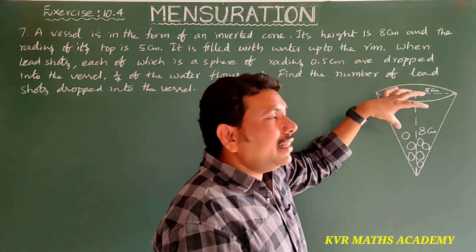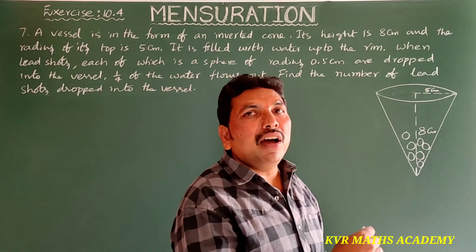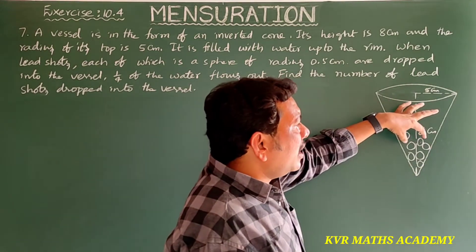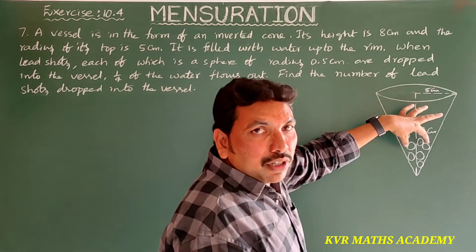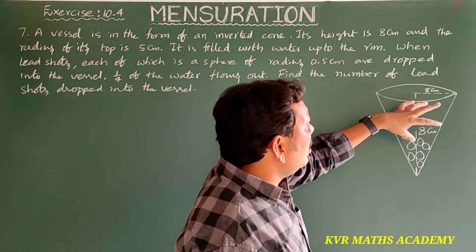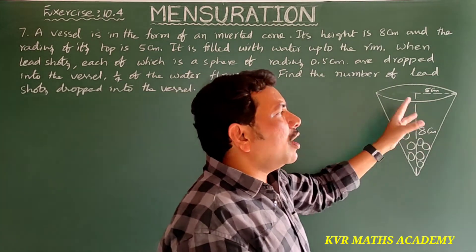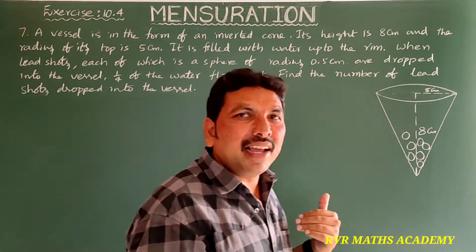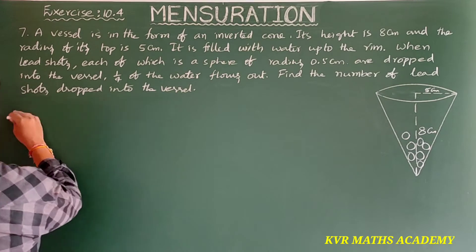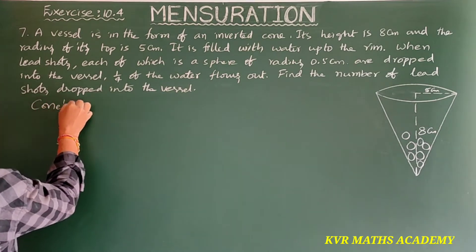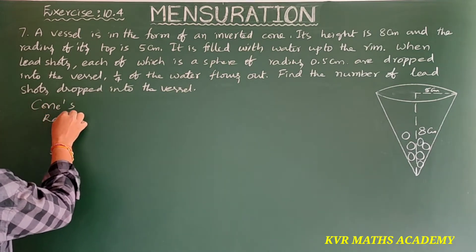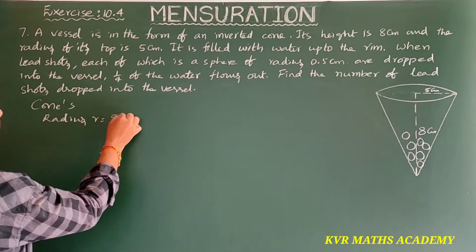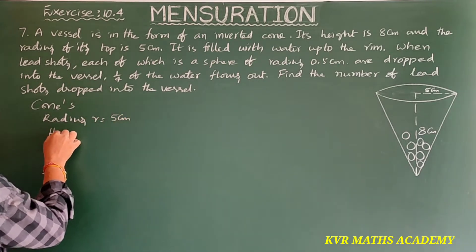When lead shots are dropped into the vessel, one-fourth of the water flows out. So that is why the volume of the spheres, which means marbles or lead shots, is equal to 1/4 of the volume of the conical vessel. For the cone: radius r is equal to 5 centimeters.